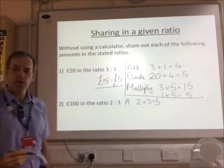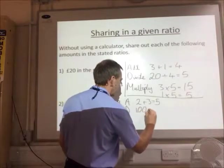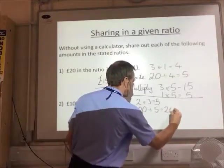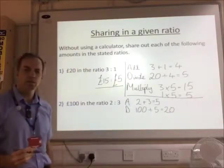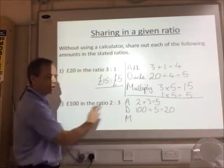Then I'm going to divide. 100 divided by 5 equals 20. And then I'm going to multiply each of these ratios.